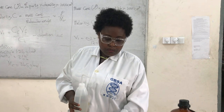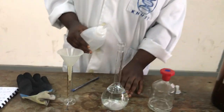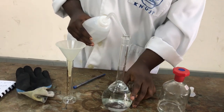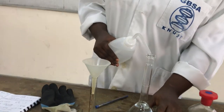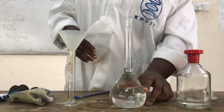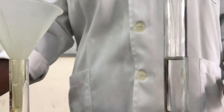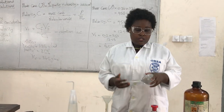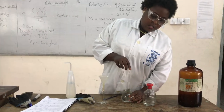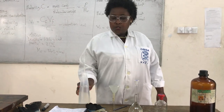Remove the funnel, then top up the solution to the meniscus at eye level. Gently top up, making sure it does not exceed the meniscus. Check that it is exactly on the meniscus, then cover the flask and gently shake to mix the solution.